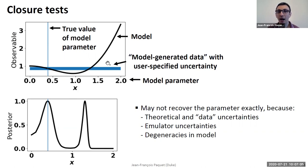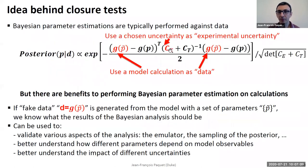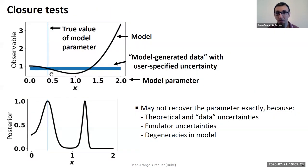So even if I generate, even if here I put a certain value of the parameters, it doesn't mean that my posterior will be sharply peaked there, because it depends on the uncertainty that I have here, the experimental one and theoretical one. So you have some uncertainty, you get some uncertainty on your posterior.